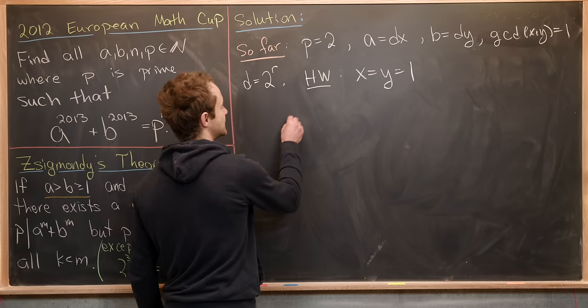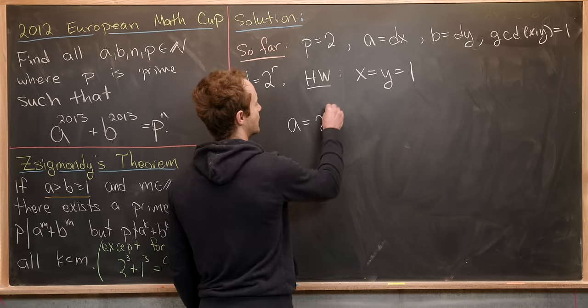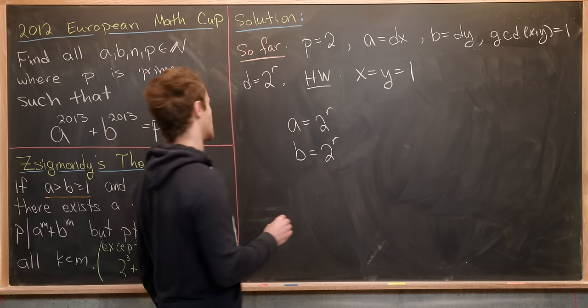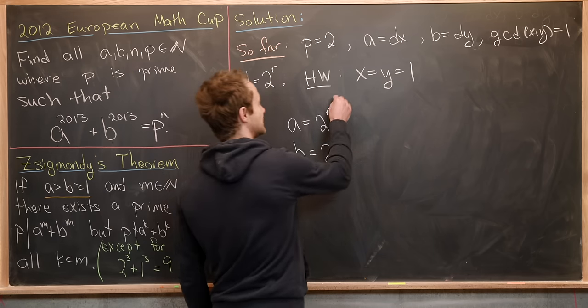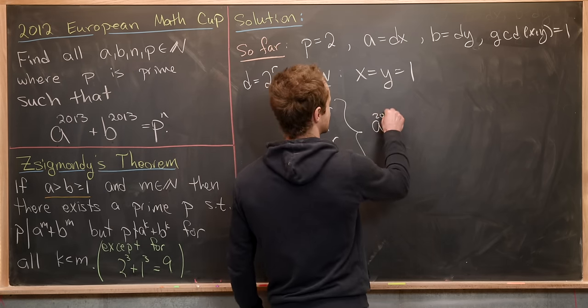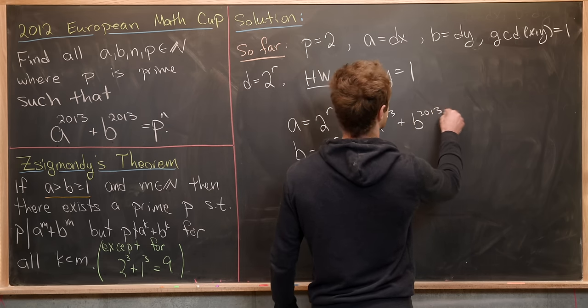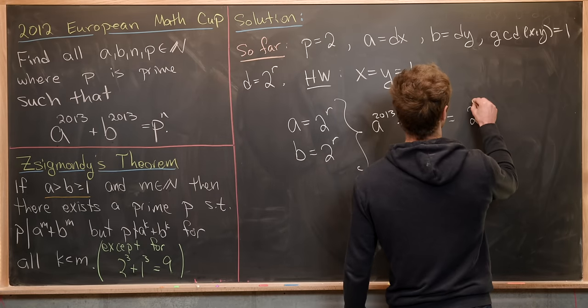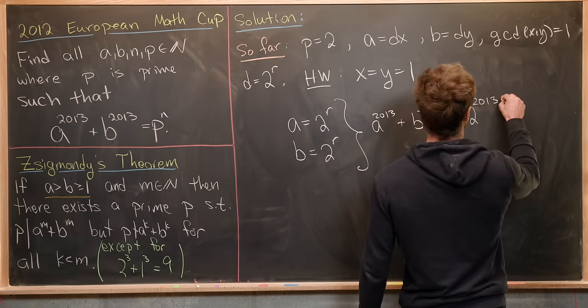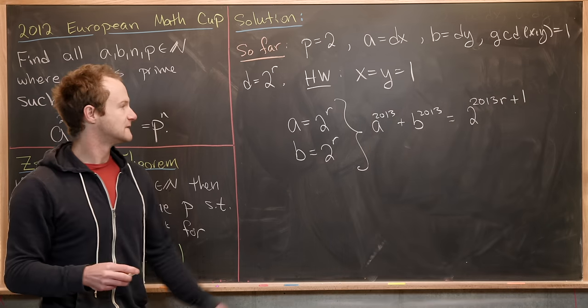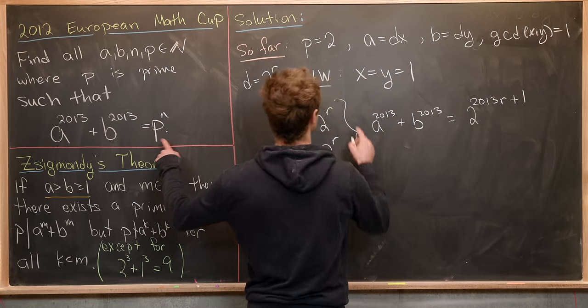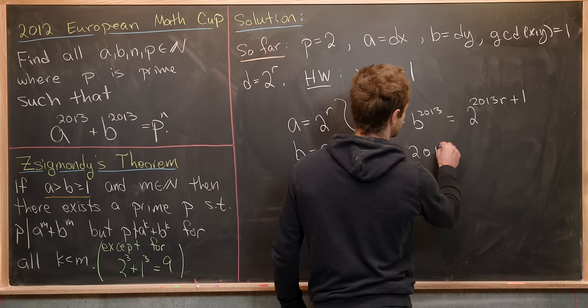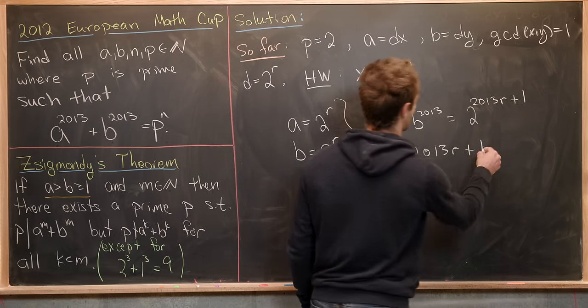So that tells us a has to be of the form two to the r. B has to be also of the form two to the r. But now putting this together, we see that a to the 2013 plus b to the 2013 is going to be equal to two to the 2013 times r plus one. So that tells us that our p, well, we already knew that that was equal to two.